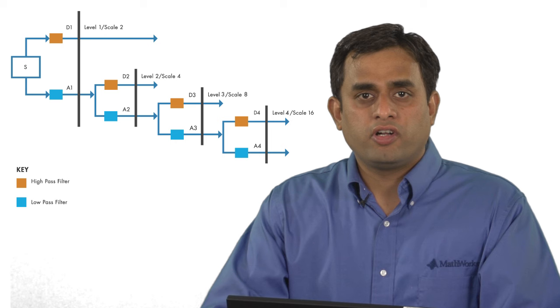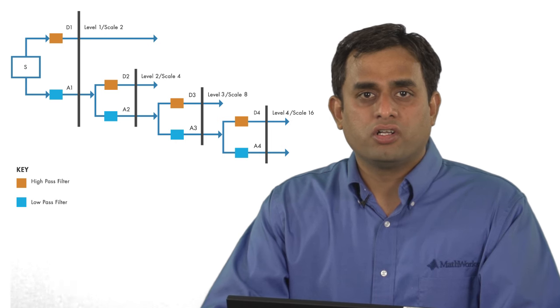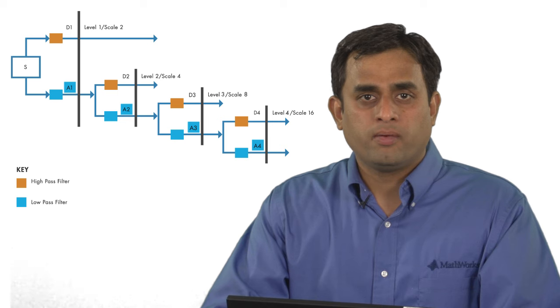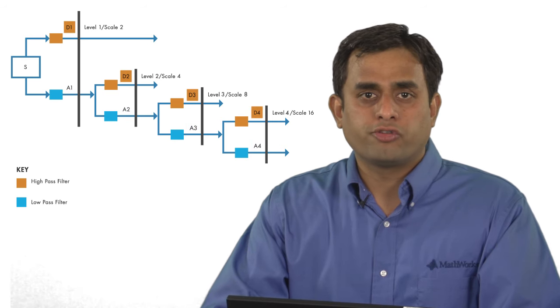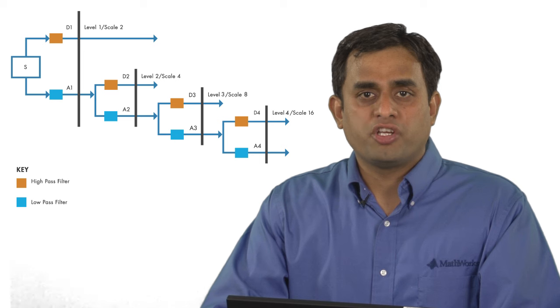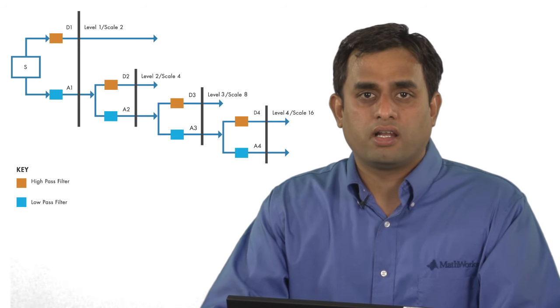Recall that the discrete wavelet transform splits up a signal into a low-pass subband also called the approximation level and the high-pass subband also called the detail level. You can decompose the approximation subband at multiple levels or scales for a fine scale analysis.